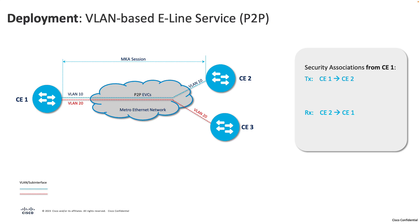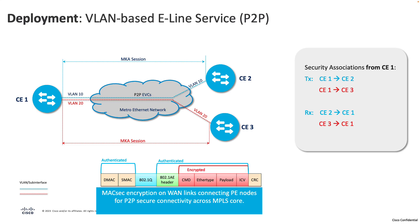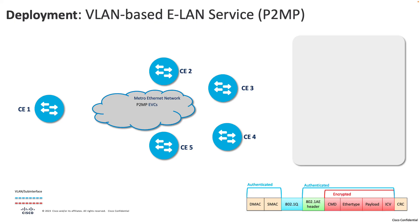In an E-line service design, VLAN 10 could be extended from CE1 to CE2 and VLAN 20 from CE1 to CE3. From a security association perspective, CE1 establishes specific SAs for transmitting and receiving encrypted data — transmitting to CE2 and CE3, while also receiving from them. This bidirectional configuration ensures data integrity and confidentiality throughout the network, even as traffic passes across provider bridges or MPLS core.